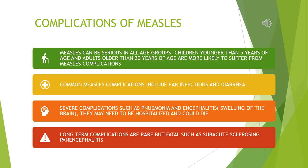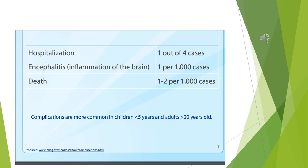Complications of measles. Measles can be serious in all age groups. Children younger than 5 years of age and adults older than 20 years of age are more likely to suffer from measles complications. Common complications include ear infections and diarrhea. Severe complications such as pneumonia and encephalitis — swelling of the brain — may require hospitalization and could be fatal. Long-term complications are rare but fatal, such as subacute sclerosing panencephalitis.